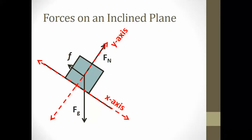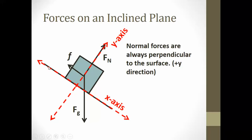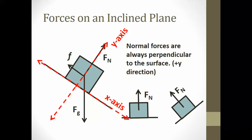The forces acting on the car on the inclined plane are: the normal force, which is always perpendicular to the inclined plane and lies along the y-axis; gravity, which always points straight down; and friction, which always opposes motion and points in the negative x-direction. Friction is already in the x-direction and the normal force is in the y-direction, but gravity needs to be broken into x and y components. Note that the normal force is always perpendicular to whatever surface the object is on.